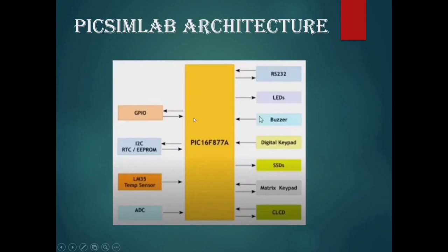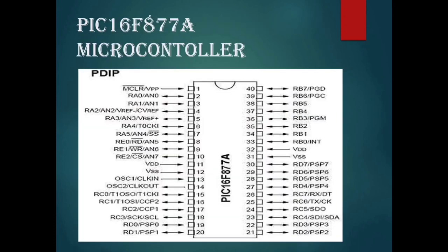The PixSimLab architecture uses the PIC16F877A microcontroller with GPIO — general purpose input and output — along with RTC, EEPROM, LM35 temperature sensor, analog-to-digital conversion, CLCD display, matrix keypad, buzzer, LEDs, and RS-232. The PIC16F877A has 40 pins: the first 20 are arranged on the left side and the other 20 on the right side, making it easier to connect peripherals as functions are spread across the pins.